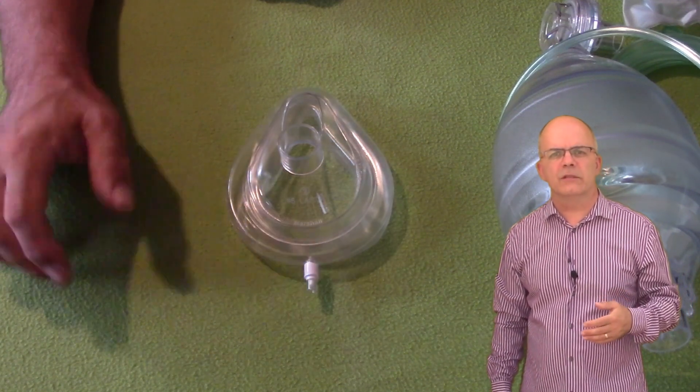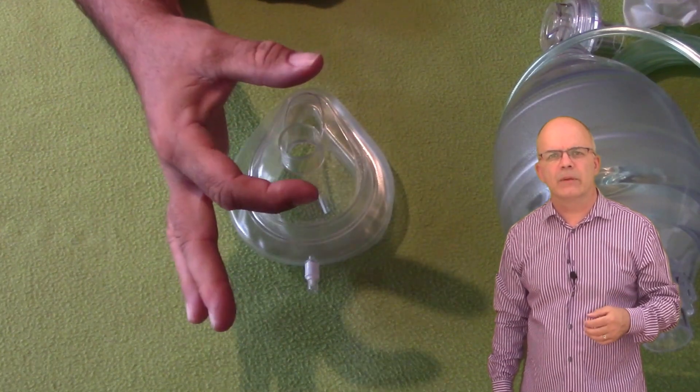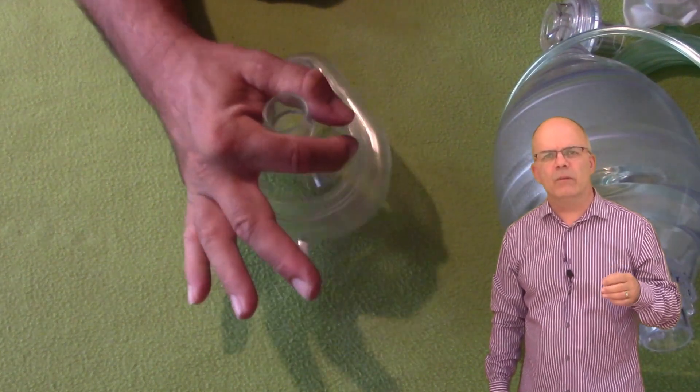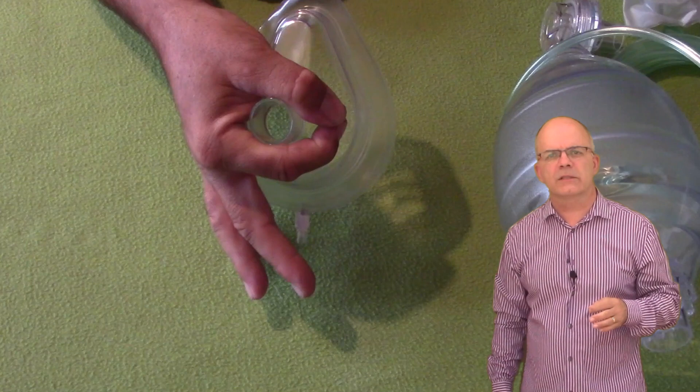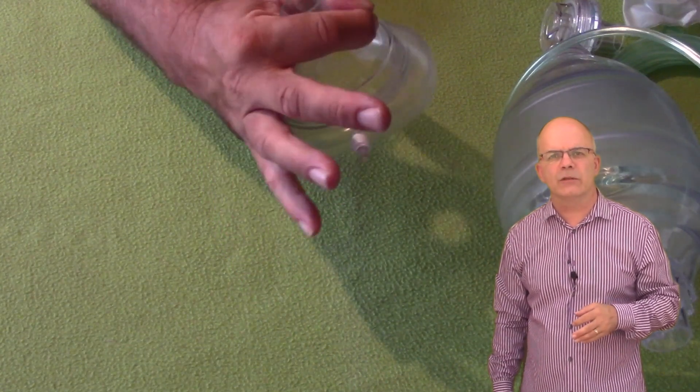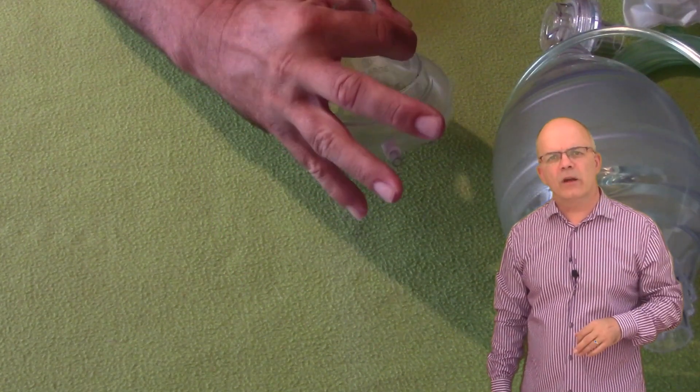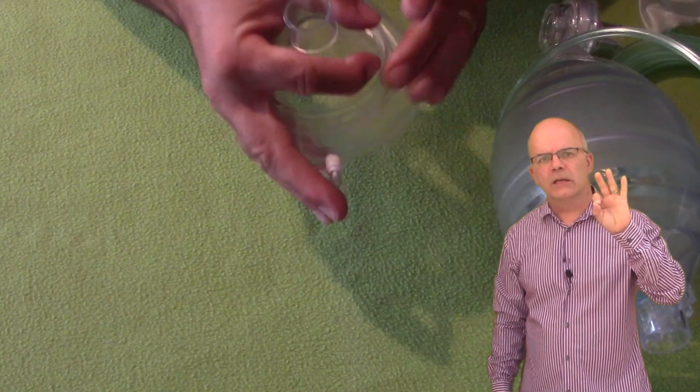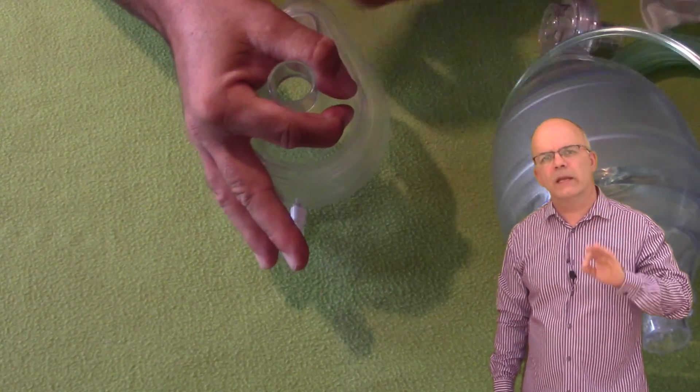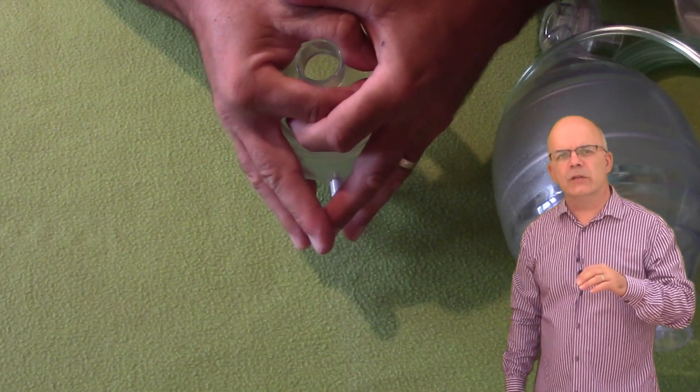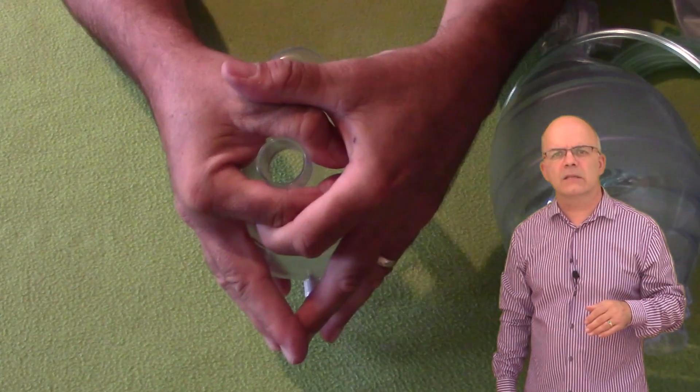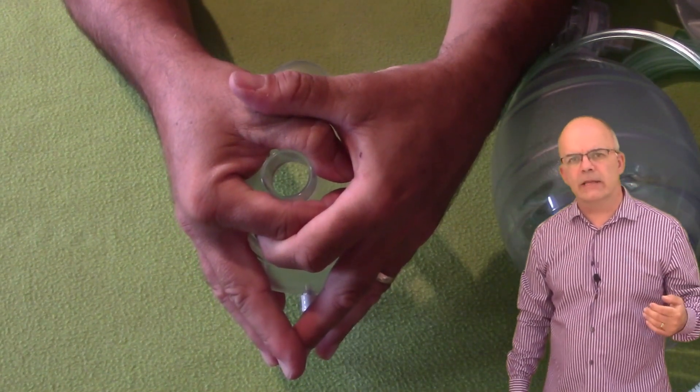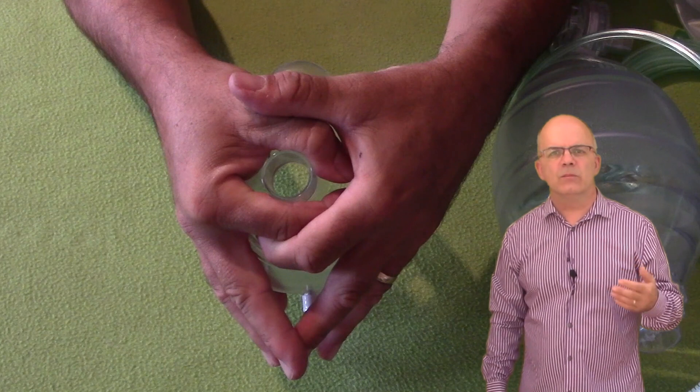One method taught for holding the mask to the face was the EC clamp. This is a grip in which the thumb and index finger hold the mask down over the nose and mouth of the patient, forming a C, while the other three fingers on the hand grasp the patient's mandible, forming an E. This could be done using one or two hands, but once again, in a novice's hands, a two-handed grip is more appropriate.